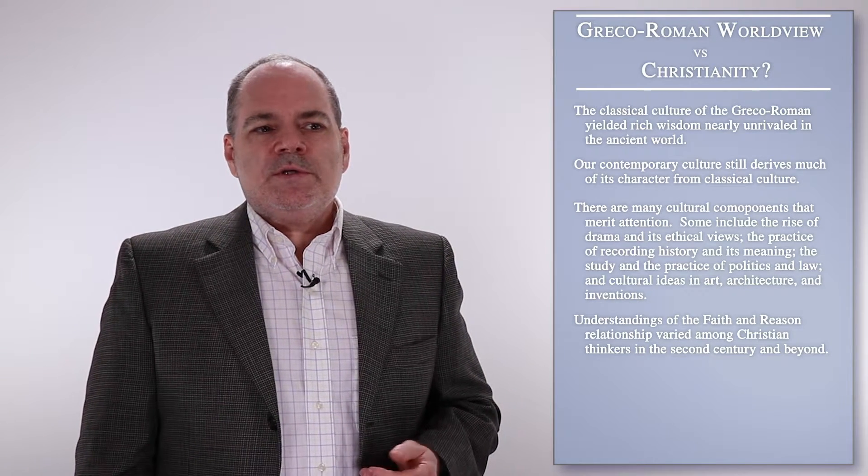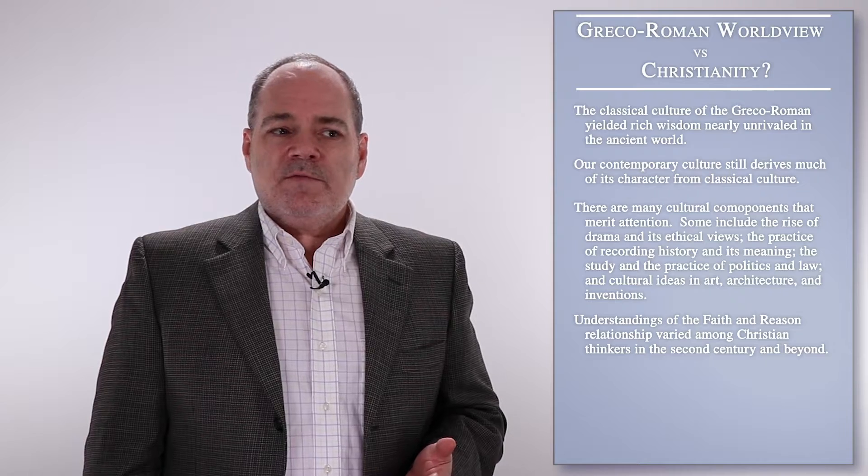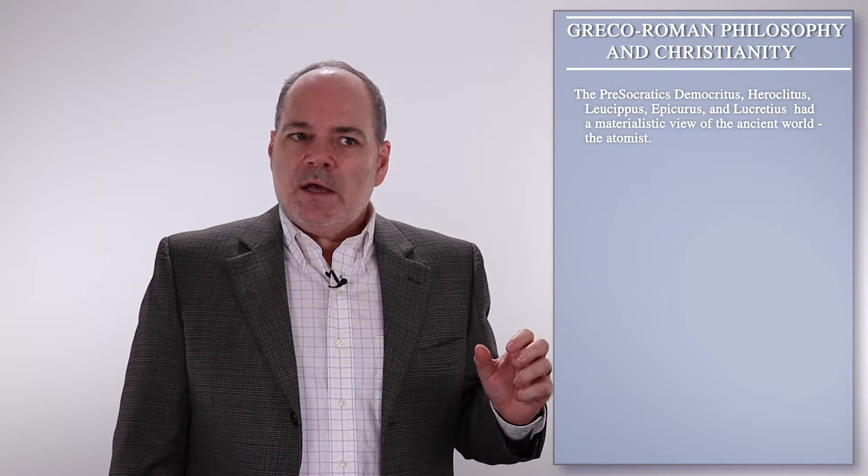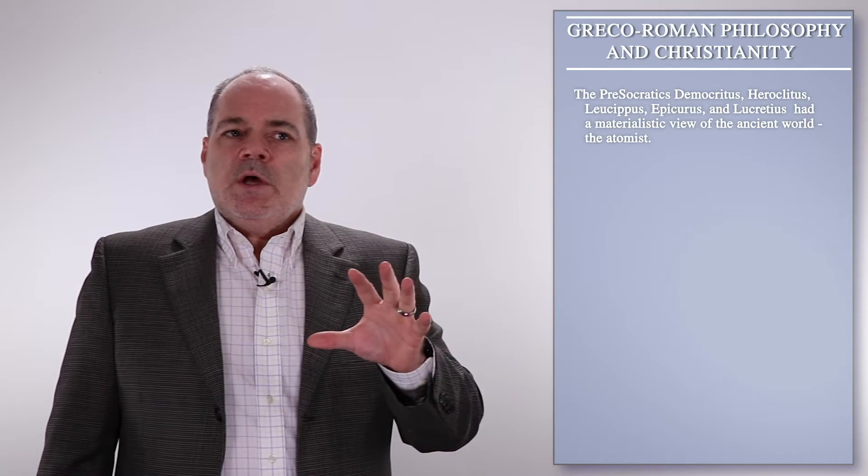We will discuss the intellectual and philosophical aspects of classical culture and note just a few of the key differences. Here are some of the main traditions in the classical world. The first would be the materialism of the pre-Socratics — Democritus, Heraclitus, and Leucippus — and perhaps best seen in Epicurus and Lucretius. There we have a materialistic view of the ancient world: the atomists.